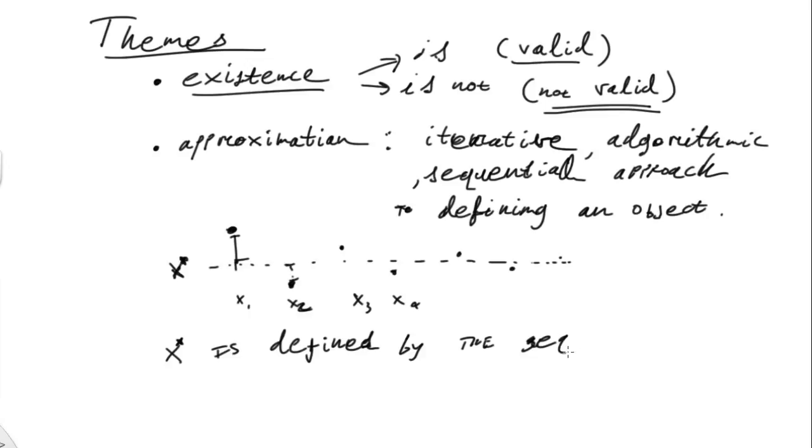It turns out that x star is defined by the algorithm, or the sequence. x star is defined by the sequence, and that's how we actually understand what x star is, in terms of x1, x2, x3, x4, and so on, forever. That notion is going to show up a lot. In fact, the notion that a sequence is actually the object we're interested in, and it actually constructs x star. x star is not something that exists outside, or independently of the sequence itself.